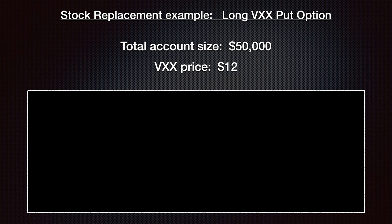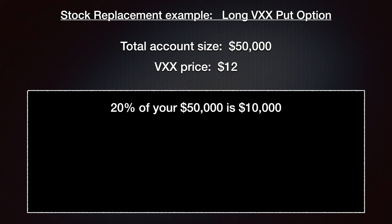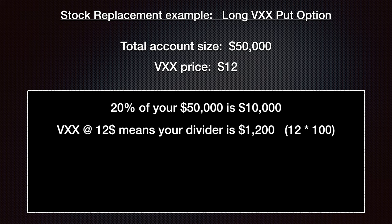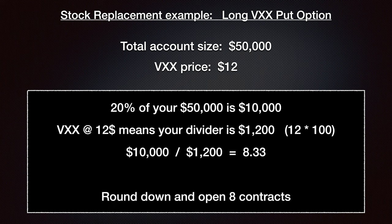Let me do another example so you can see how easy this is. Let's say a trader has an account size of $50,000 and the VXX is trading at $12. 20% of the $50,000 is dedicated to the tactical volatility strategy, so they have $10,000 to allocate to this trade. If the VXX is trading at $12, we multiply that by 100 and our divider is $1,200. You take your $10,000 and divide by $1,200 — that's 8.33. We round down to the nearest full contract, so a person with a $50,000 account with the VXX trading at $12 would open eight contracts.